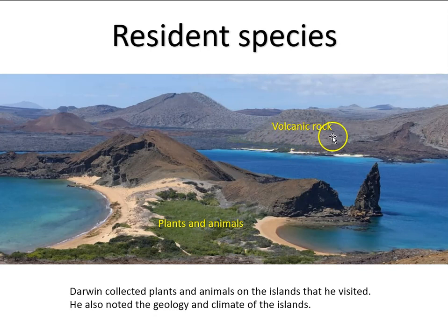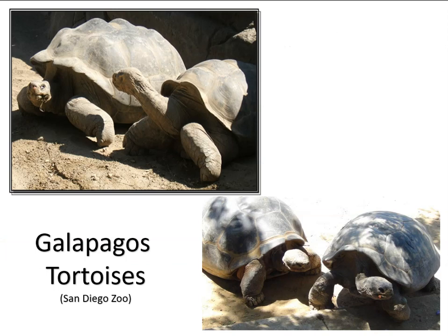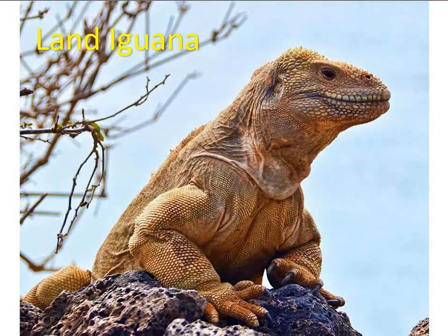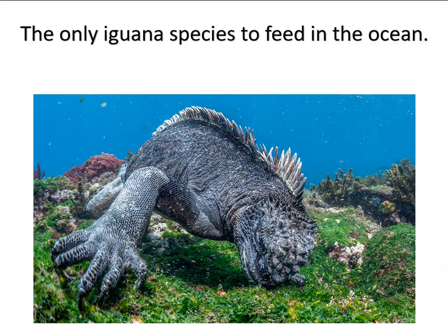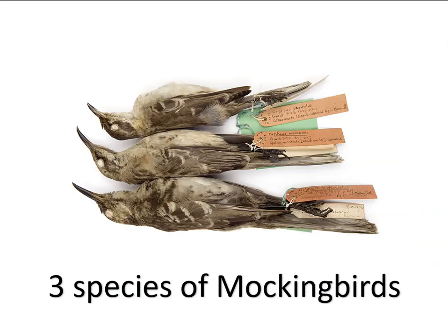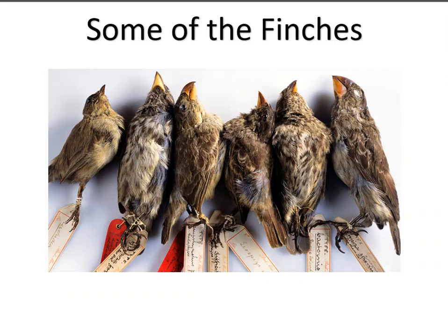On the islands Darwin found the Galapagos tortoises, the land iguana, and a fascinating species of marine iguana — the only iguana species to feed in the ocean, the Galapagos marine iguana. There were also several species of mockingbirds and, of course, the famous finches.